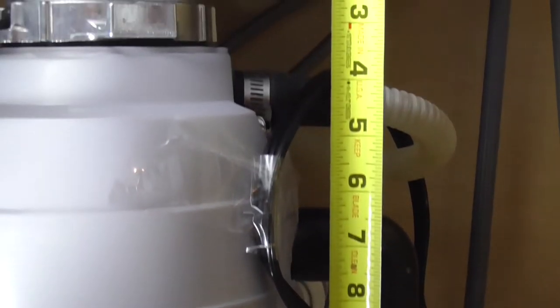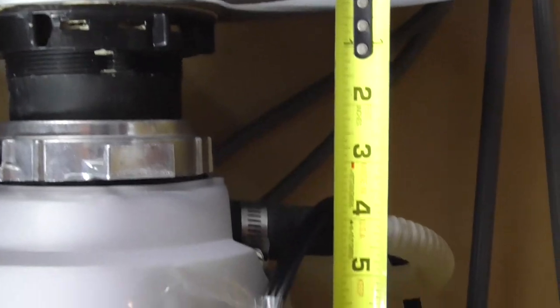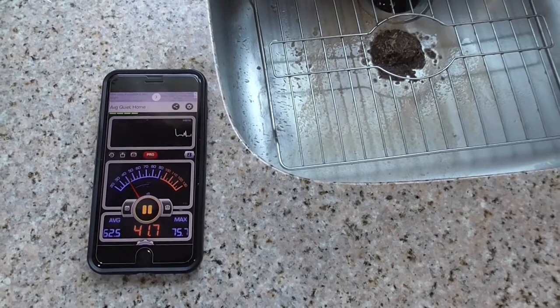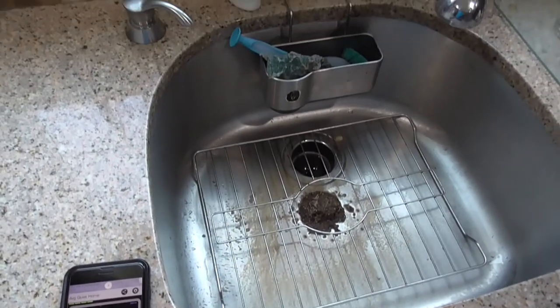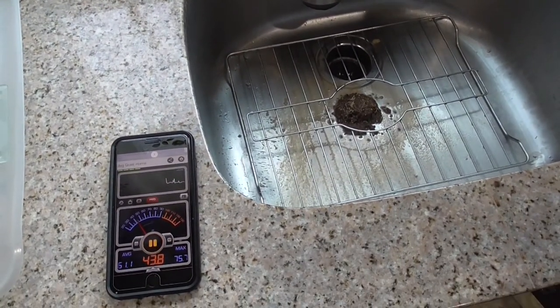Before starting the unit, the noise is around 44 dB. There is no noise in the room - 42, 41 as you see. And then I'm going to record the noise with the machine on.